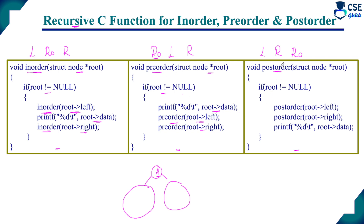For post-order traversal: if root is not equal to null, call postorder(root->left) to visit the left subtree completely, then call postorder(root->right) to visit the right subtree, and then print root->data. All three of these recursive functions are very easy to implement.